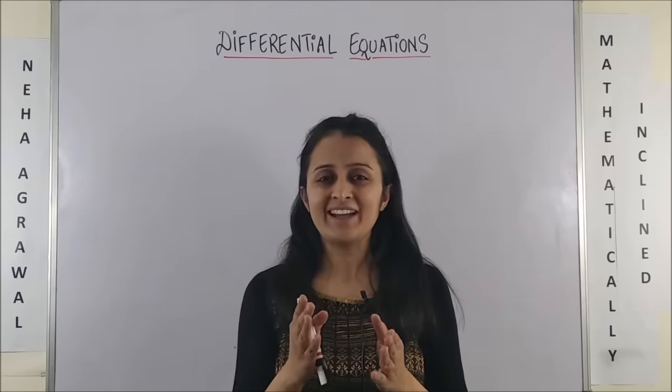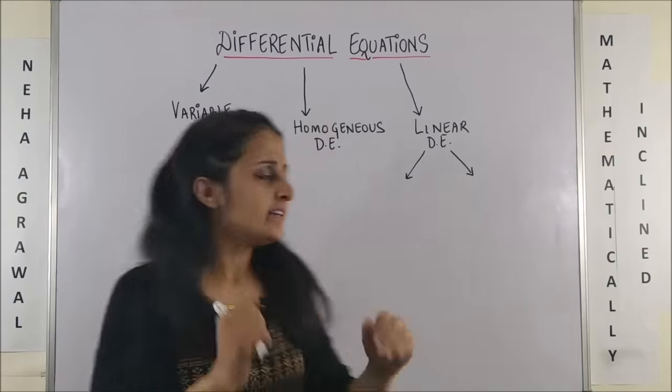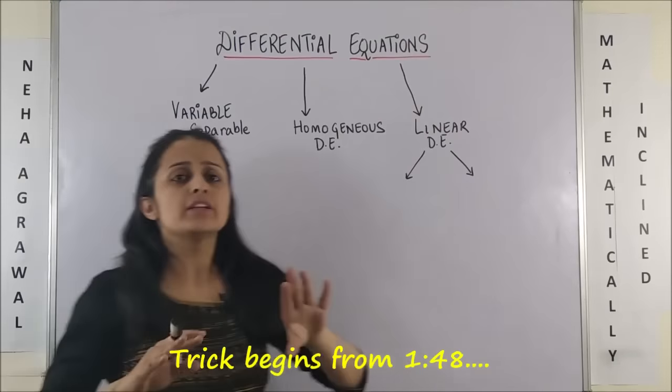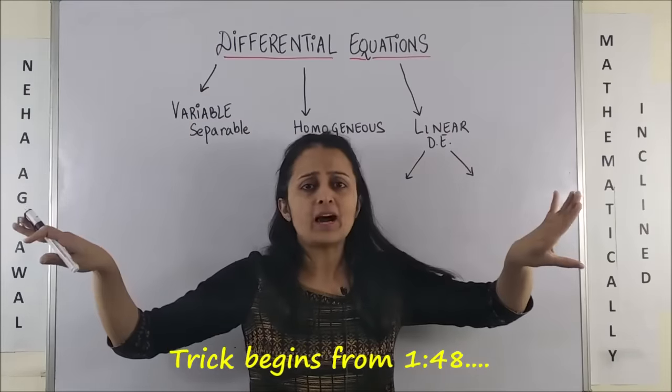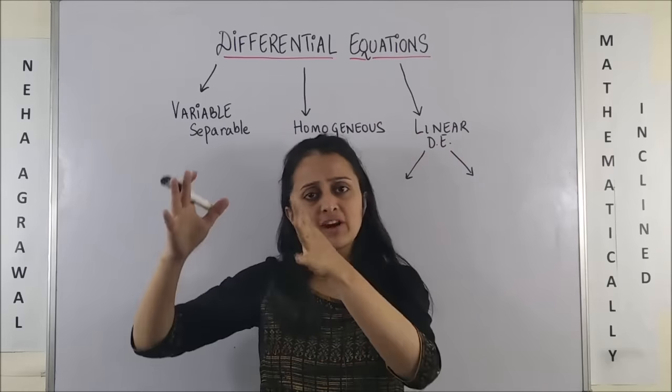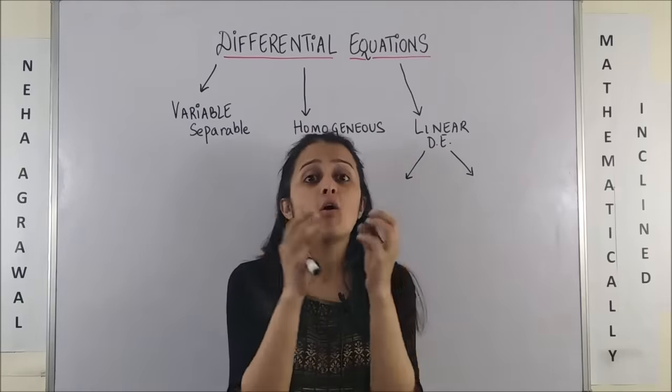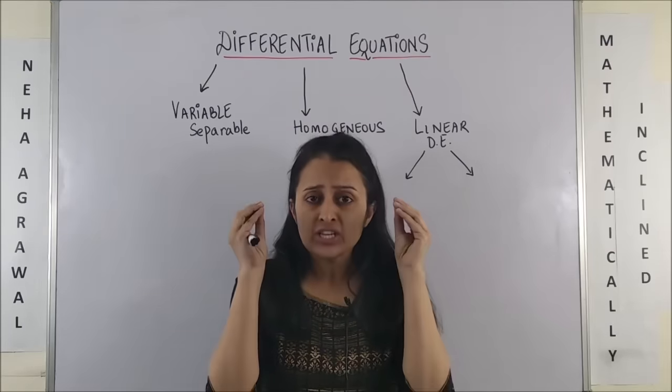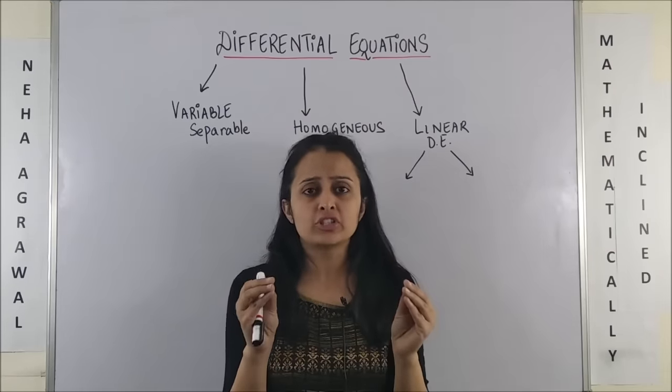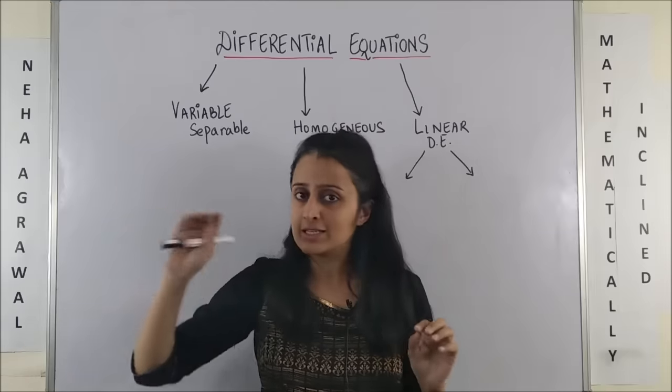To identify from the form. So, if we go by the name, variable separable means when you can completely separate out two - like a function of x with dx and a function of y dy on two separate sides. Homogeneous means all the terms, literally each and every term of the function has the same degree. So, uniform or homogeneous degree throughout.